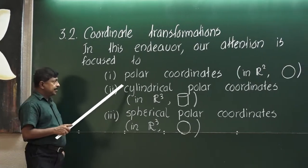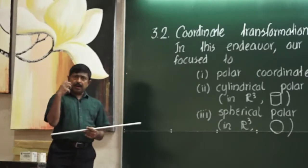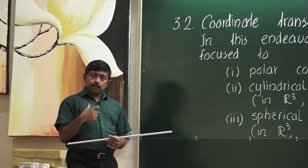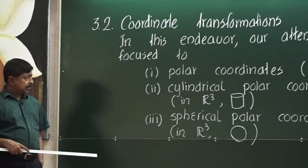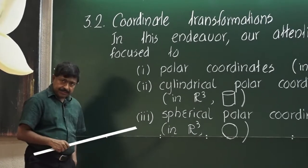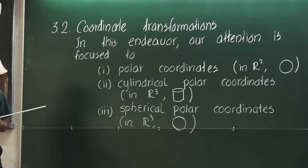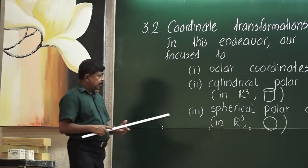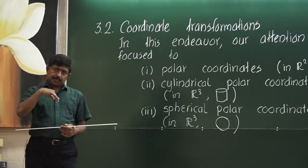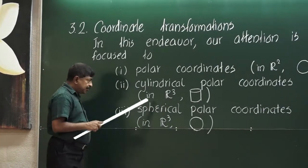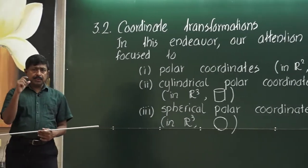The second is cylindrical polar coordinates, used when you are in R3 and the domain of integration is a subset of R3. The third is spherical polar coordinates, useful when the domain is a sphere or a portion of a sphere — for example, a hemisphere. Without spherical polar coordinates, it is extremely hard to evaluate such an integral.